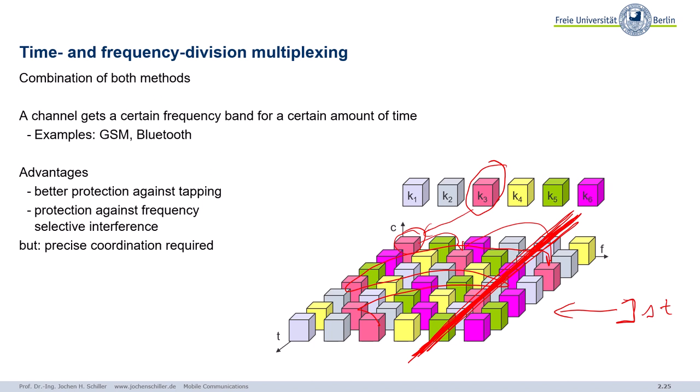If you have enough redundancy in your data using forward error correction, you can simply recalculate the original data based on what you received. There may be some gaps in the received data, but you can reconstruct the original. The keyword here is forward error correction — please look this up if you're not familiar with the concept.